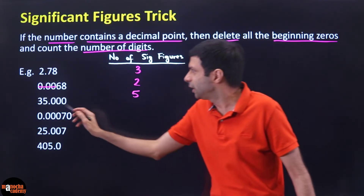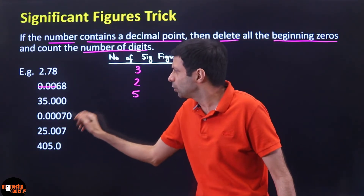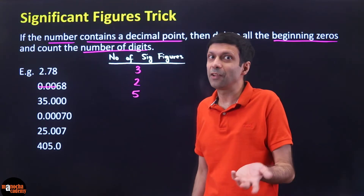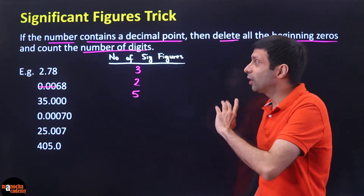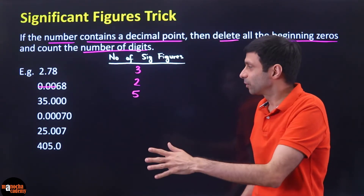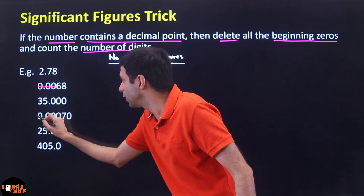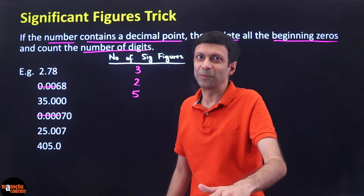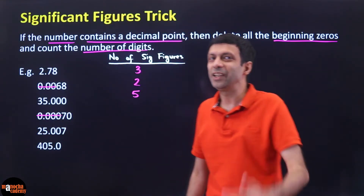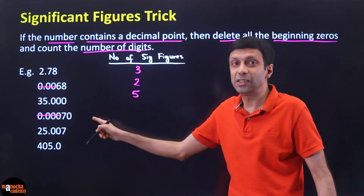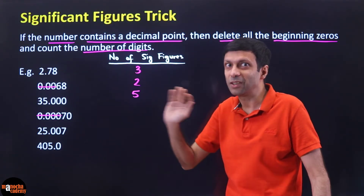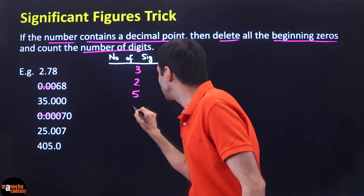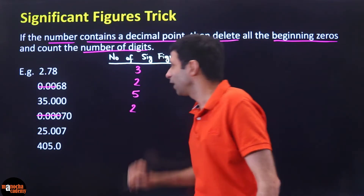What about 0.00070? Delete all the beginning zeros — remove all the zeros you see in the beginning. How many digits are left? Just 7 and 0. Please don't delete this trailing zero — only the beginning ones. So there are 2 significant figures.